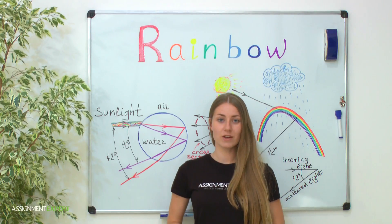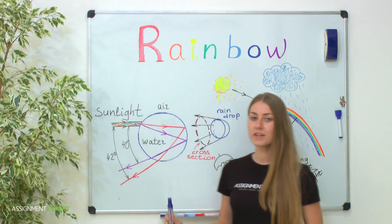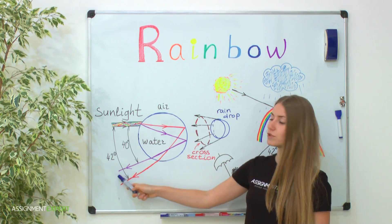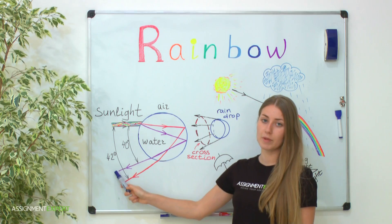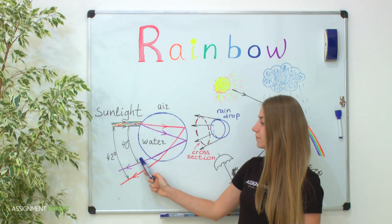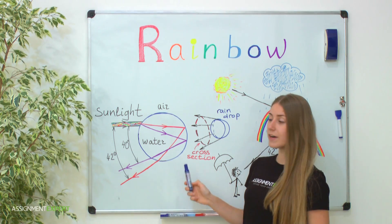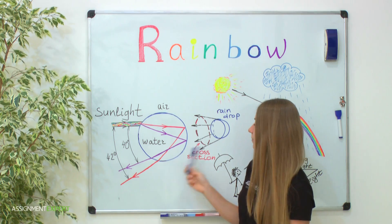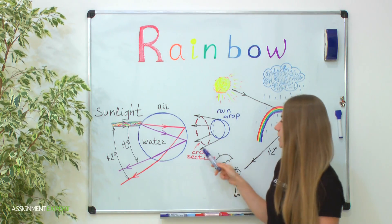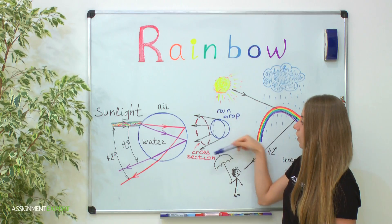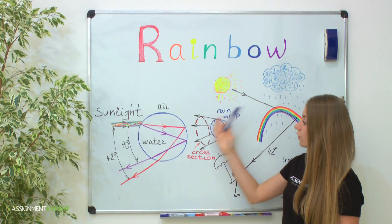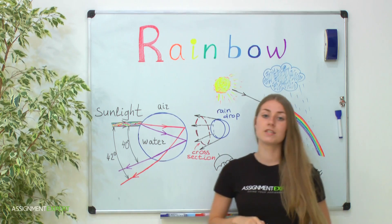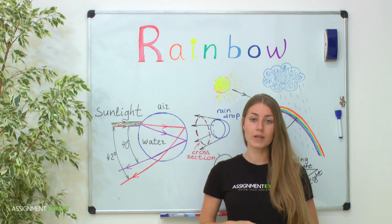If you calculate all the angles, it turns out that red light exits the drop at an angle of 42 degrees to the incoming light, and violet at 40 degrees. But as our drop is spherical, not flat as shown in this picture, the refracted rays will be located on the surface of a cone, and the cross section looks like a circle. This is the key reason why we see a rainbow as a bow.